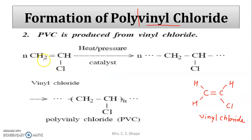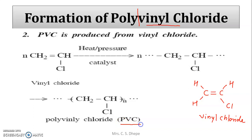The formation of PVC: CH₂=CH–Cl (vinyl chloride), under heat, pressure, and catalyst, this double bond opens to give –CH₂–CHCl–, and after completion of polymerization n is written at the subscript, giving polyvinyl chloride. This is called PVC — you may have seen PVC pipes used in agriculture or plumbing in houses.